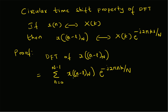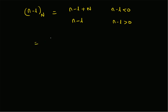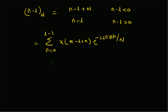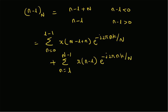Therefore n minus l mod N equals n minus l plus N for n minus l less than zero, and n minus l for n minus l greater than zero. This summation can be rewritten based on the value of n minus l mod N. The summation splits: for n equal to zero to l minus 1, n minus l is negative, so x of n minus l mod N is replaced by x of n minus l plus N, times e power minus j 2 pi n k by capital N.